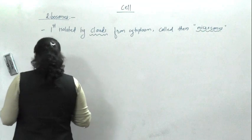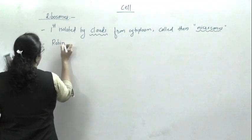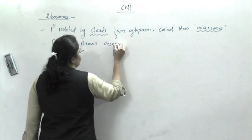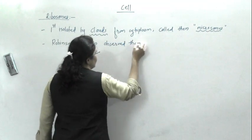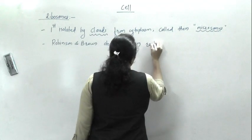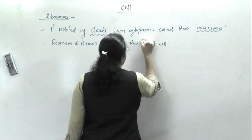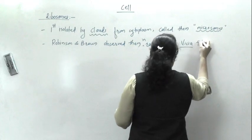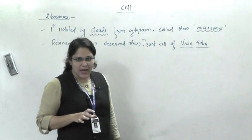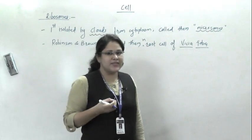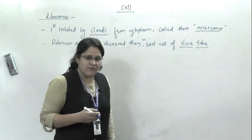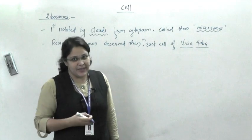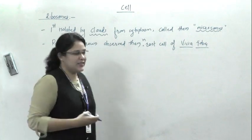Later, Robinson and Brown observed them in root cells of Vicia faba, which is a leguminous plant with pods. Whereas the term 'ribosome' was given by Palade. So these ribosomes are also called as Palade particles.